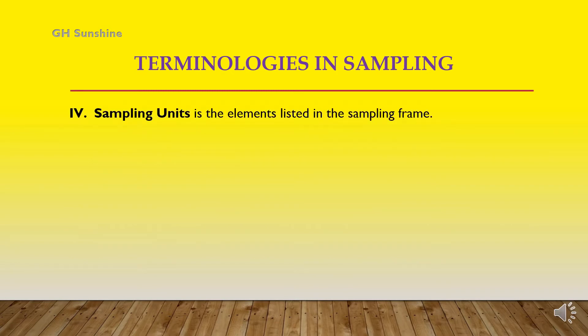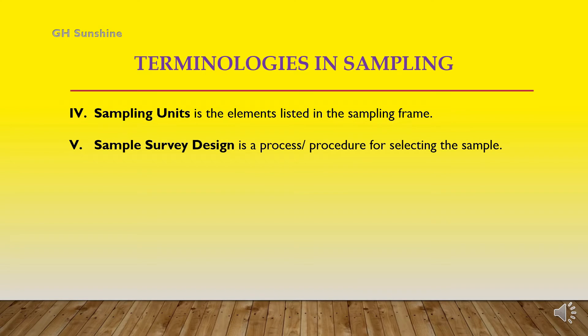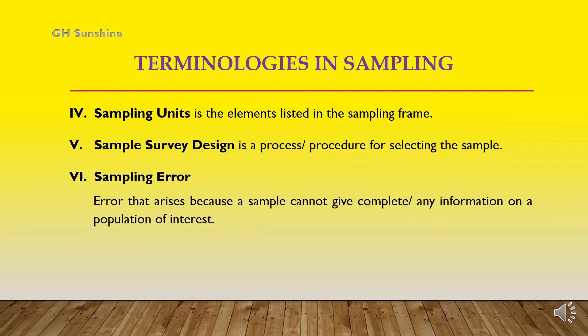Next, sampling units — the elements listed in the sampling frame. Then, sample survey design refers to a process or procedure for selecting the sample from the population. Sampling error is the error that arises because a sample cannot keep complete information on a population of interest.